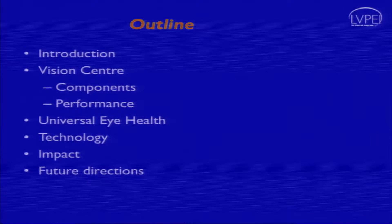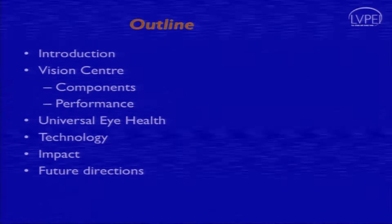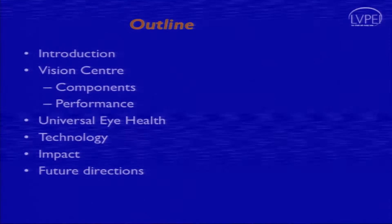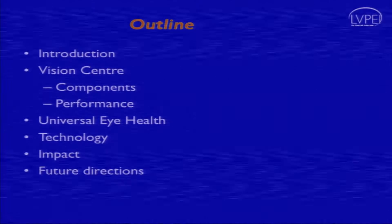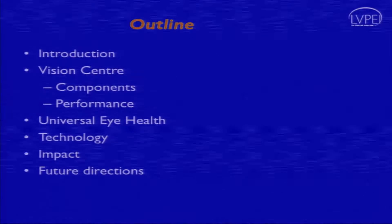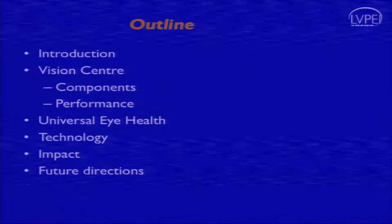This is the campus of the LB Prasad Eye Institute from where we come from. This will be the outline of the talk. I'll give you an overview of what a vision center is, what are the different components, how we are performing in these vision centers, how vision centers are being used as a model for universal eye health coverage, and what role technology has to play — which Mukesh has already highlighted. I will just touch on it and what impact it has created in the network.